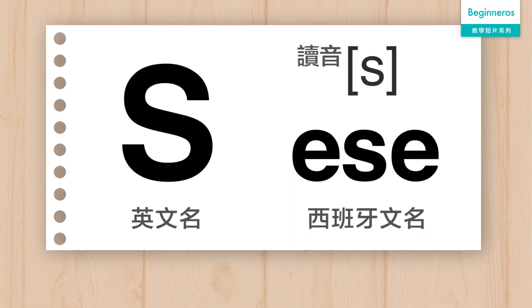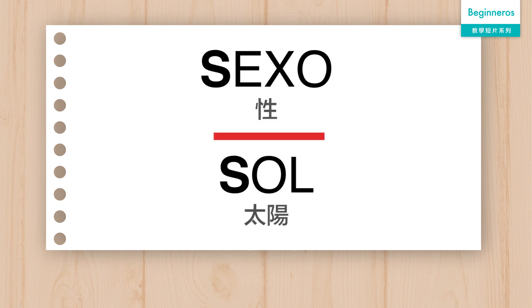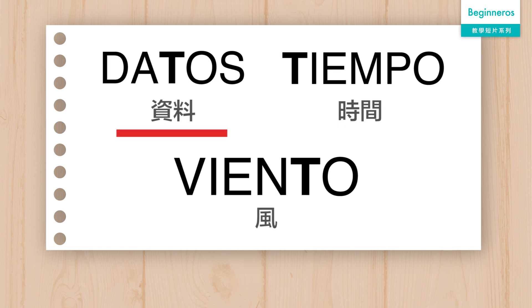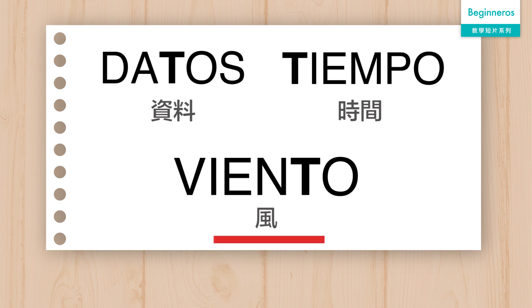接下來的 S，它在西班牙文的發音就叫做 Ese，而它的發音也跟英文一樣，S。例如 Sexo, Sol。而接下來的 T 也是非常簡單的一個字母，因為它的發音跟英文非常相似，T。例如 Dados, Tiempo, Diente。大家可能會覺得西班牙文的 D 或者 T 有點相似，但 D 是比較輕音，而 T 是比較重音。